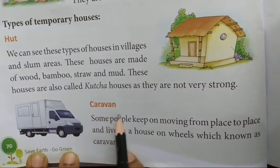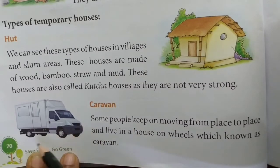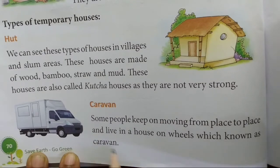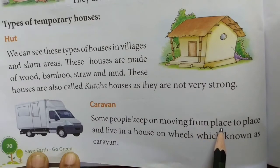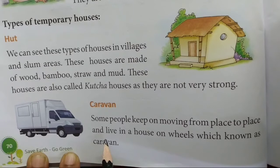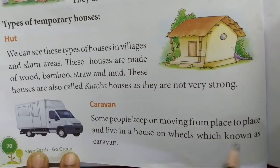Next is caravan — कारवाँ। Some people keep on moving from place to place and live in a house on wheels, which is known as a caravan. कुछ लोग एक जगह से दूसरी जगह घूमते रहते हैं और पहियों पर अपना घर बना के रहते हैं, जिसे कारवाँ कहा जाता है।